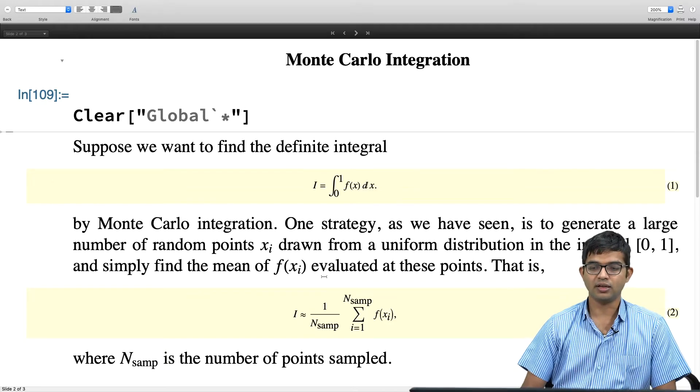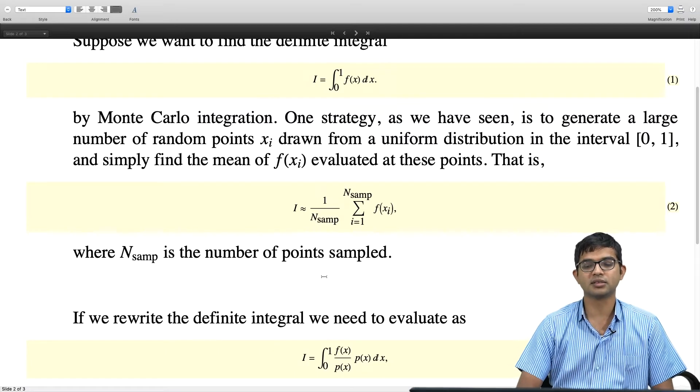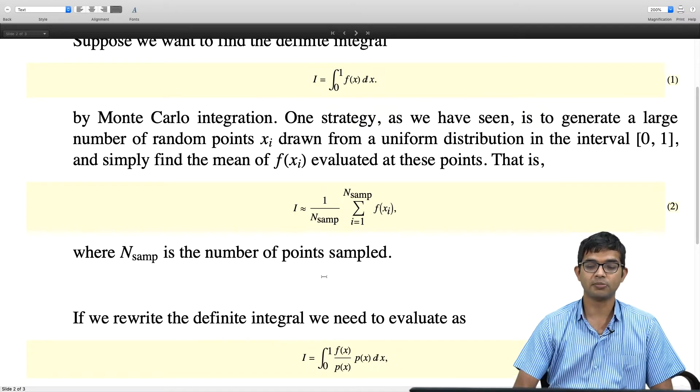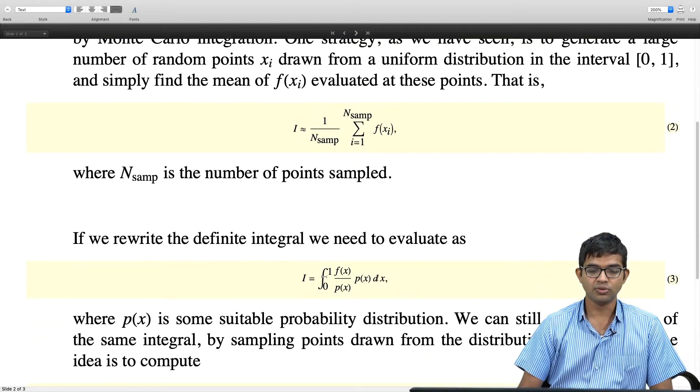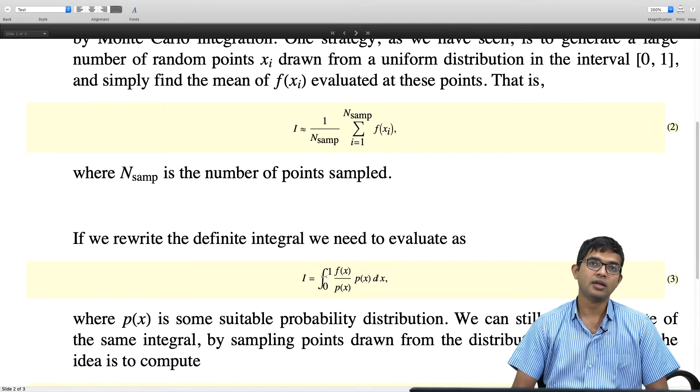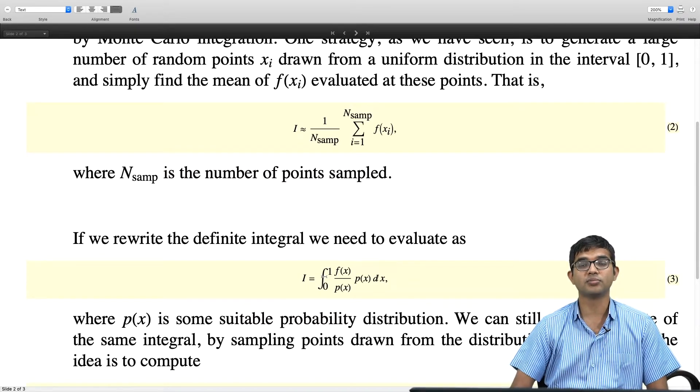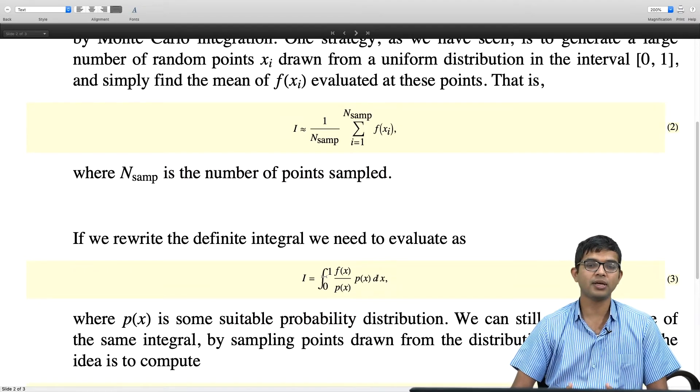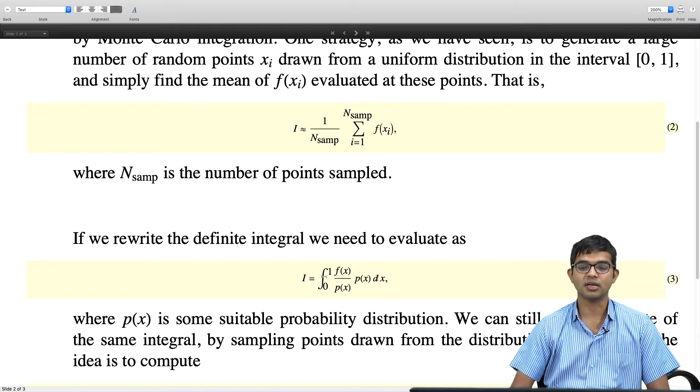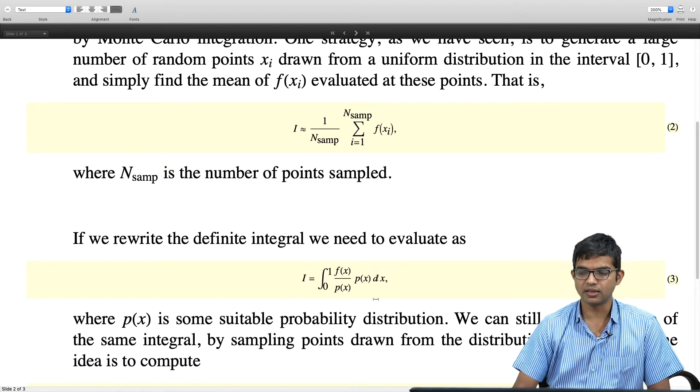It turns out that one way is to do the following. Let us rewrite this integral. Integral f(x) dx is the same as integral of f(x) by p(x) times p(x) dx. You have this freedom to multiply and divide by the same function. We will choose this p(x) to be some suitable probability distribution. The idea is that instead of picking some n_samp random variables from a uniform distribution, can we pick these numbers from some other probability distribution? And it turns out the answer is yes.